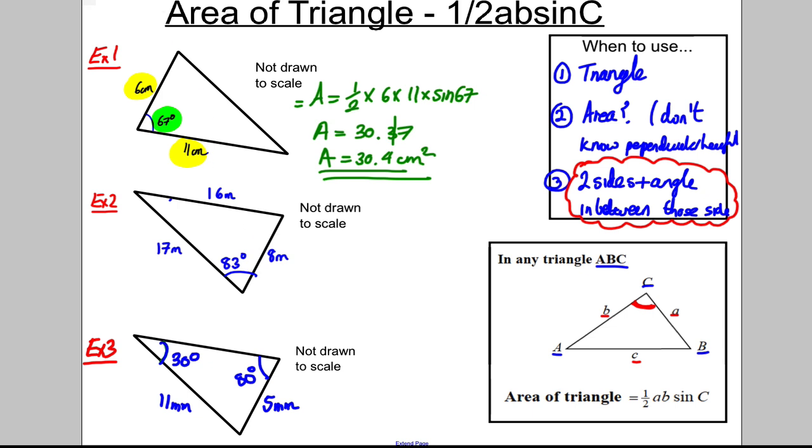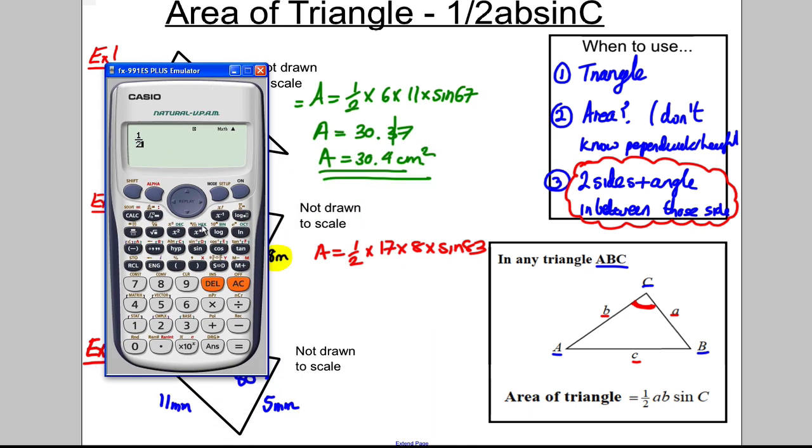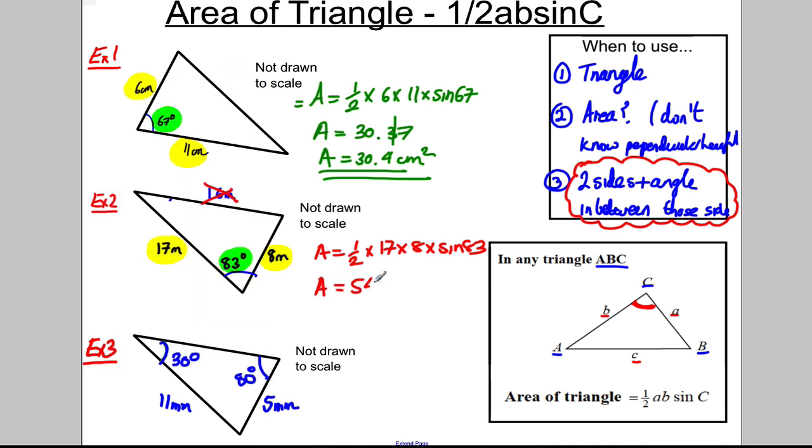What about this one? We've got two sides and the angle between. The third side is given just to confuse us - don't worry about that, forget about it. The area here is a half multiplied by 17 multiplied by 8 multiplied by sine 53. Calculator in degrees mode: one half multiplied by 17 multiplied by 8 multiplied by sine 53. Press equal: 54.3. So A equals 54.3 meters squared.